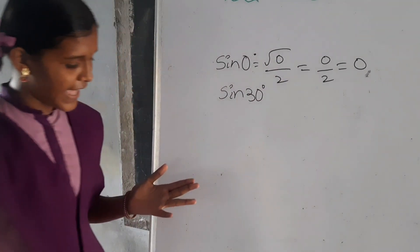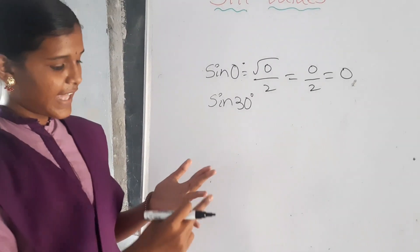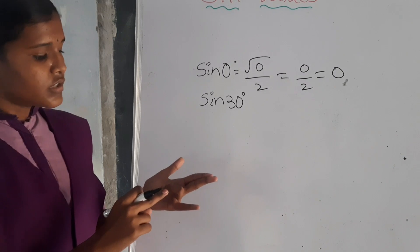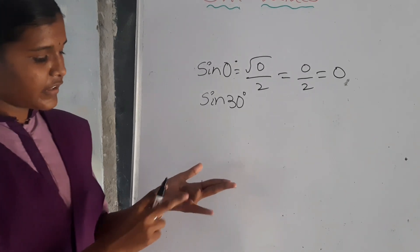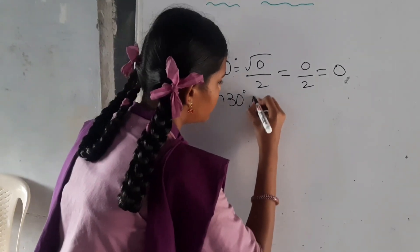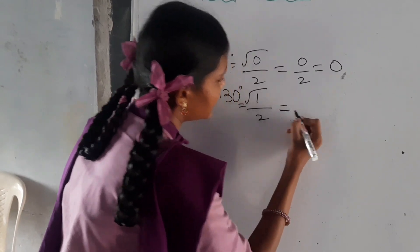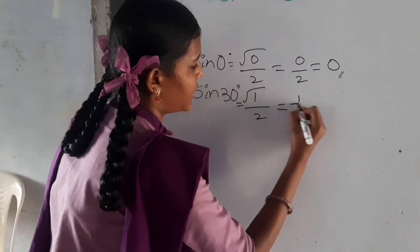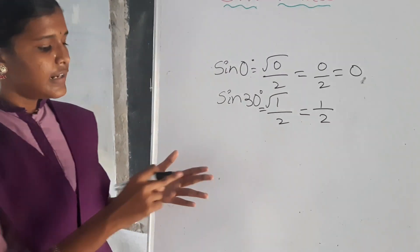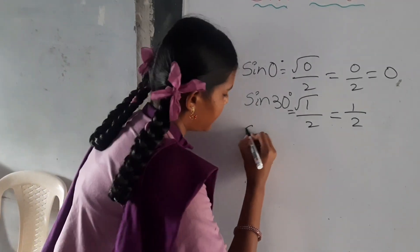Let us find the value of sin 30. We have assumed that the ring finger has 30 degrees. The number of fingers below it is 1. So root of 1 by 2 — root 1 is nothing but 1 by 2. Therefore sin 30 is equals to 1 by 2.